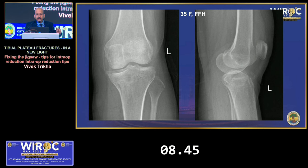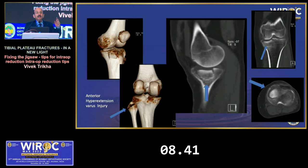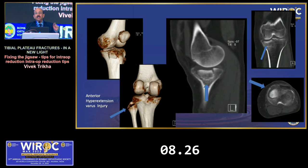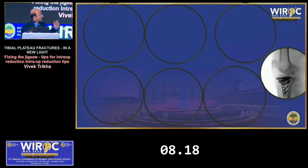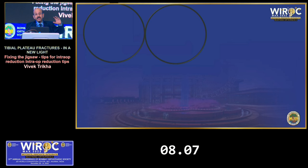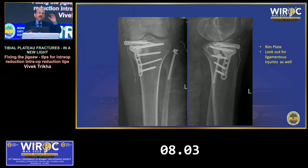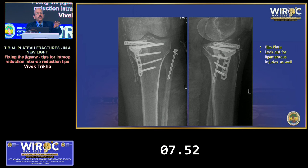Always look for anteromedial compressions — the so-called hyperextension injuries. Very common in ladies around 30-40 years old, look for lateral fibular fractures or injuries. They usually have ligamentous disruption of the FCL or LCL, which needs to be taken care of. A rim plate on the medial side has been put to hold the anteromedial depression along with fibular fixation, because ligamentous instability and stability of the tibial condyle are very important.